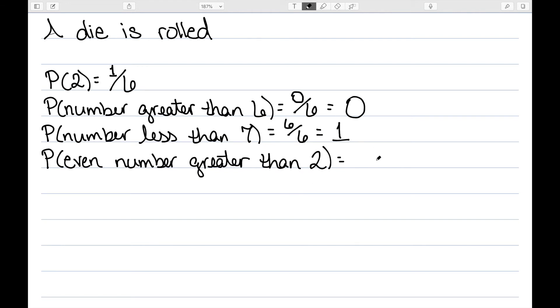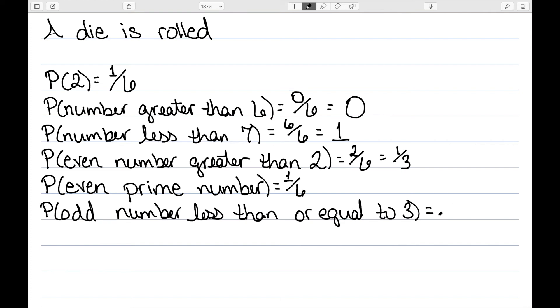The probability of an even number greater than two. On a die, we have the even numbers two, four, and six, so two of those would be greater than two, out of a total of six sides, or one-third. The probability of an even prime number? Well, there's only one even prime number, which is two, out of a total of six sides. And the probability of an odd number less than or equal to three? Well, that would be one or three, so two out of six sides, or one-third.